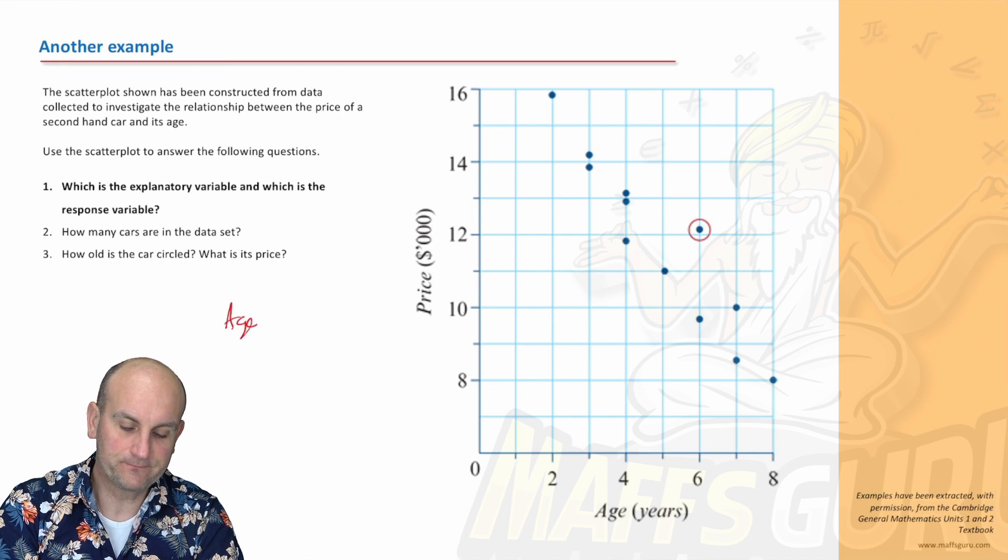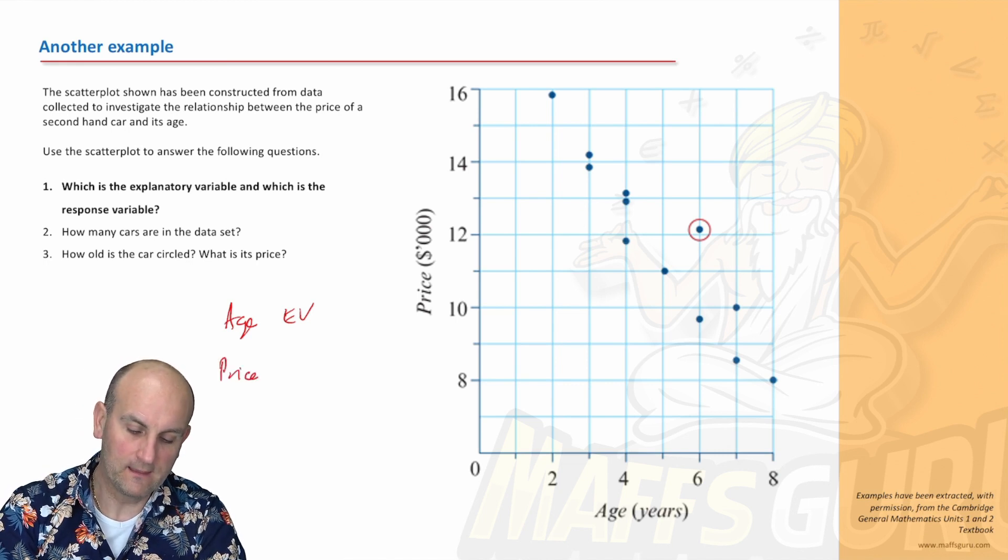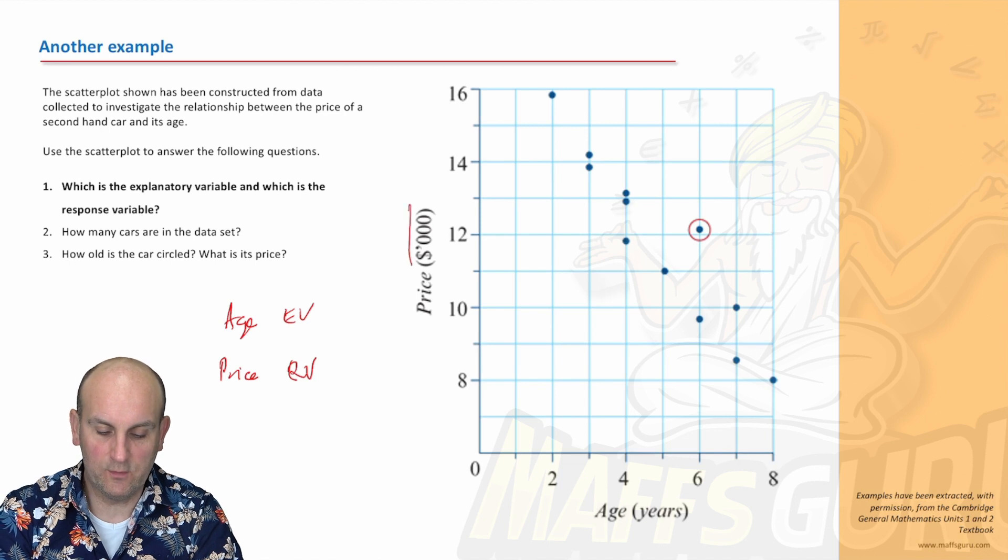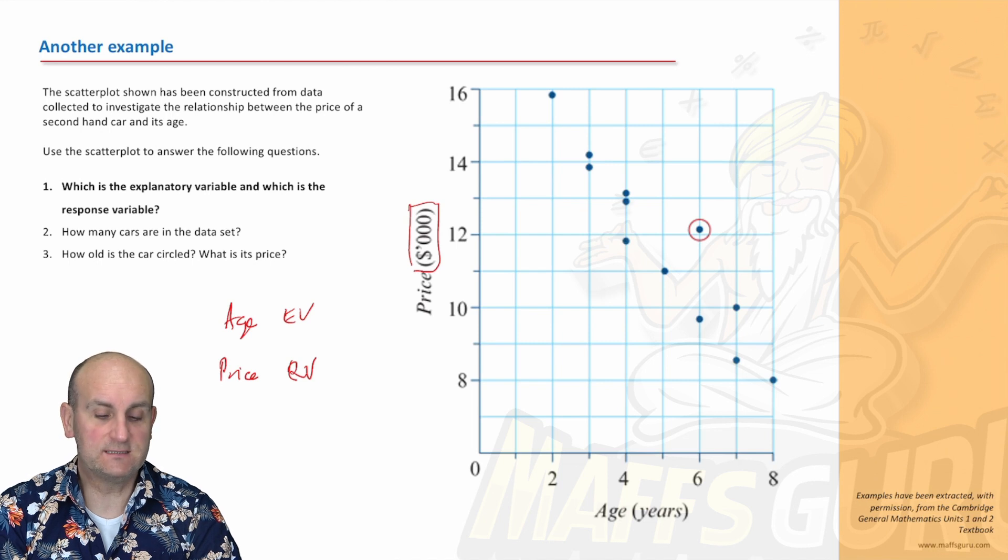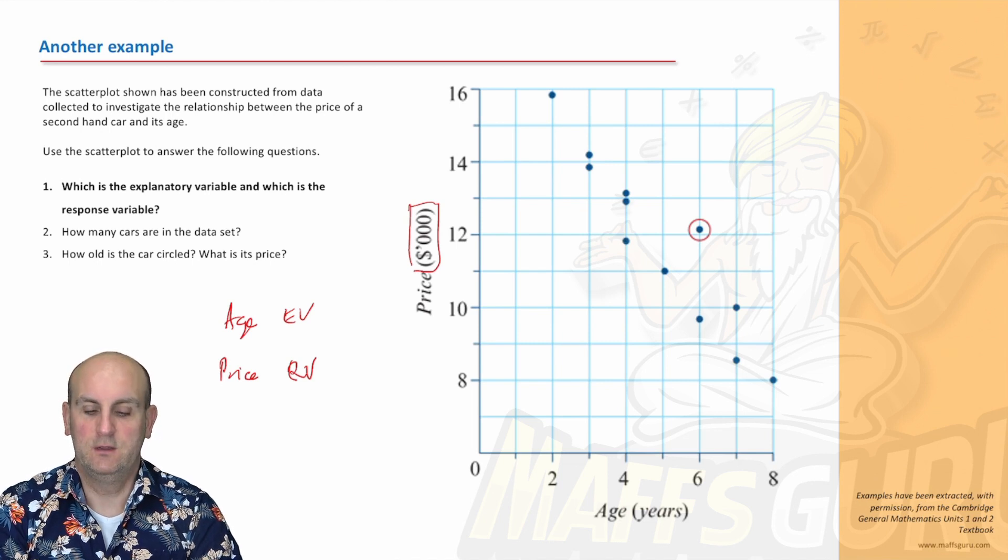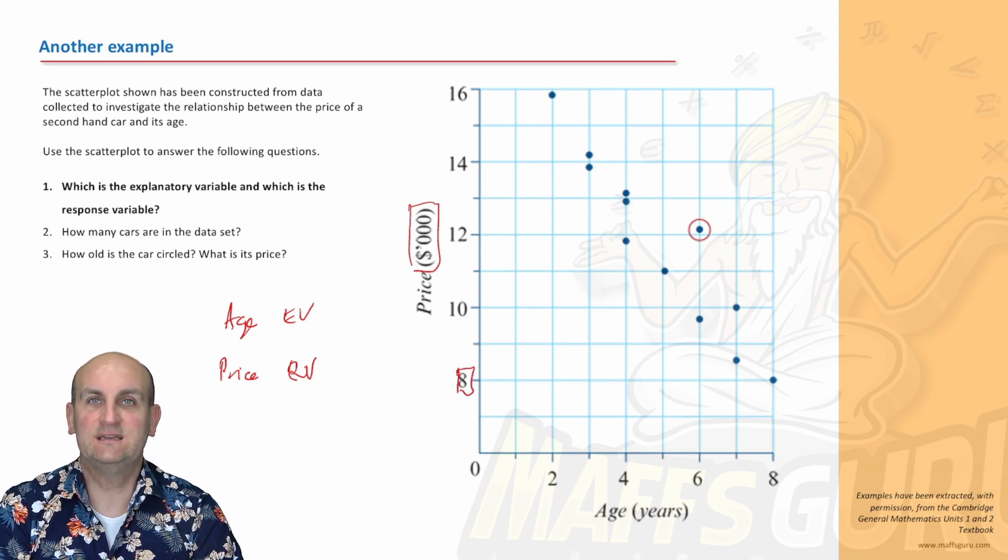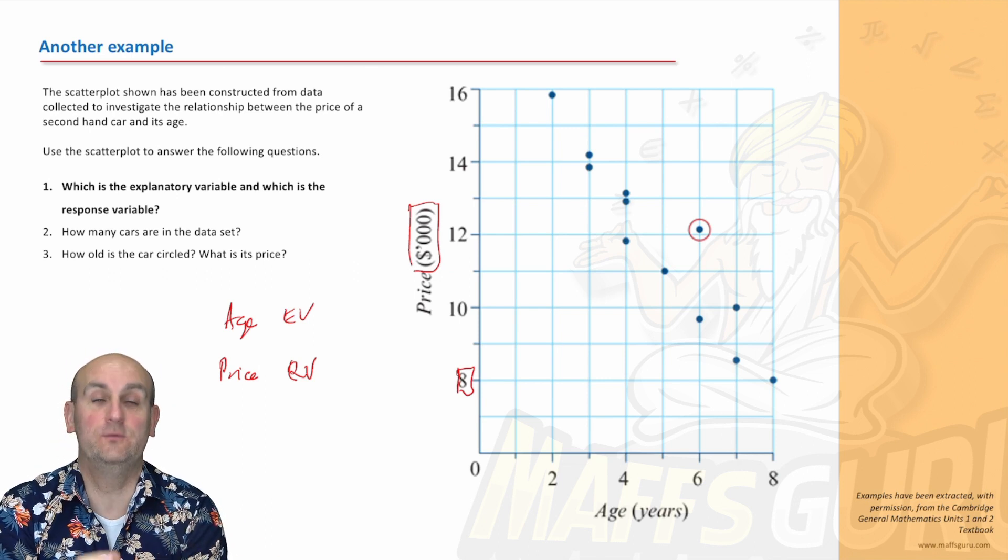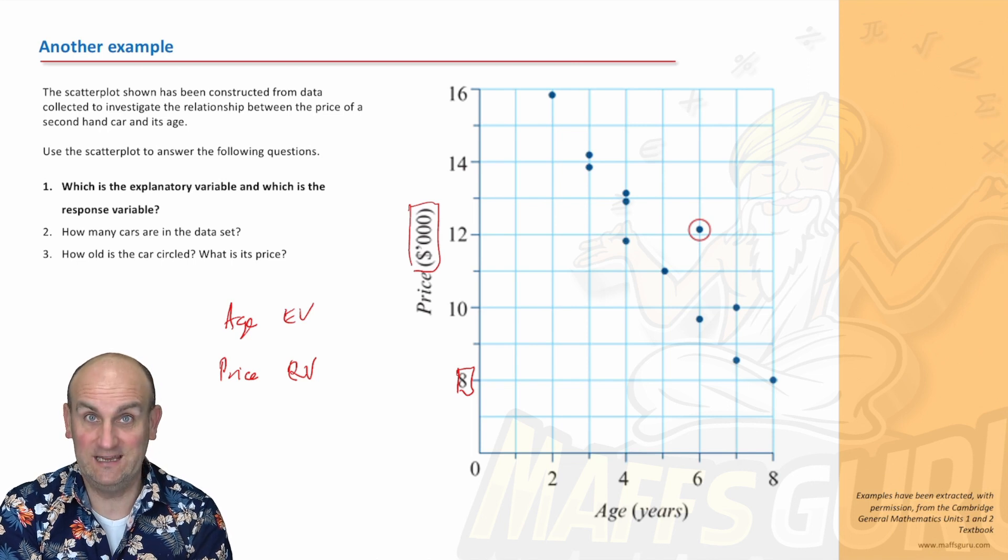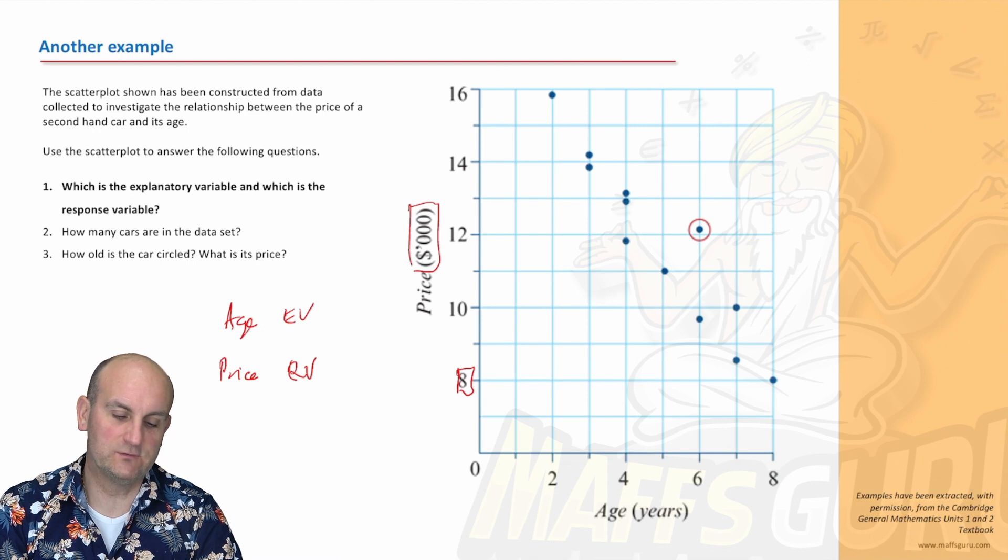So which is the explanatory variable and which is the response variable? Well, my age is my explanatory variable because it's on the x-axis. And my price is my response variable. And notice here what they've done. They've written price as thousands of dollars. So what that now means is when I read this 8 off here, it's not 8 dollars, that's 8,000 dollars. 10, and in exams, they trick you with this stuff because it's so important to read what the units are.